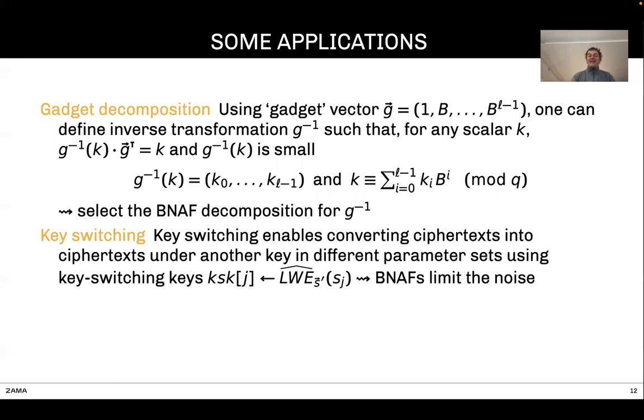One application of that gadget decomposition is key switching. Key switching is just a way to convert a ciphertext under a key into another one using another key and possibly another set of parameters. This is done using key switching keys that are just encryption of key digits that are scaled by a power of B, using that gadget decomposition. Because BNAF is optimal, this is a very good way to limit the noise when doing that key switching operation.